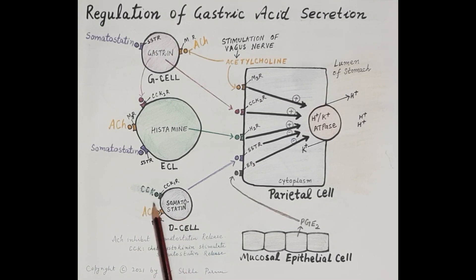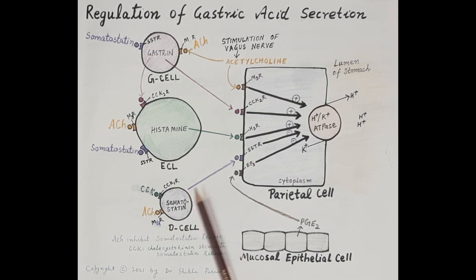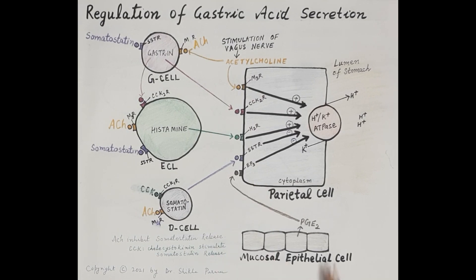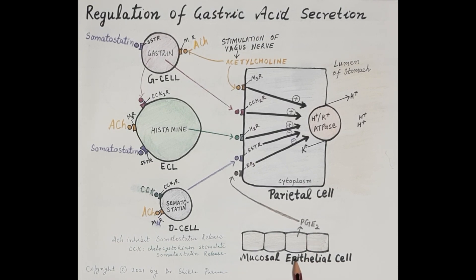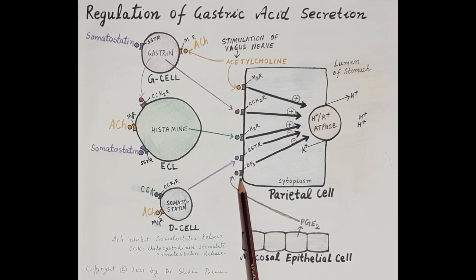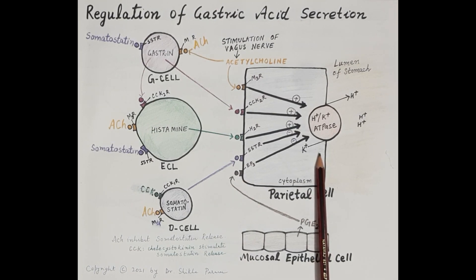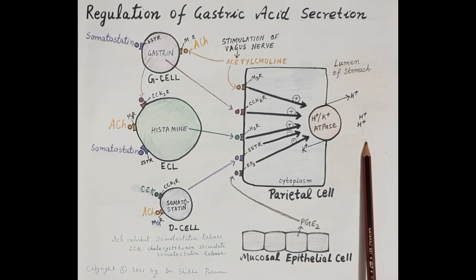Somatostatin is released by D cells in the gastric glands. Acetylcholine inhibits the D cells, reducing somatostatin release, whereas cholecystokinin stimulates D cells and increases somatostatin release — which in turn inhibits the parietal cells. Similarly, prostaglandin E2 produced by gastric mucosal epithelial cells binds to EP3 receptors on parietal cells and inhibits the proton pump, reducing acid release.